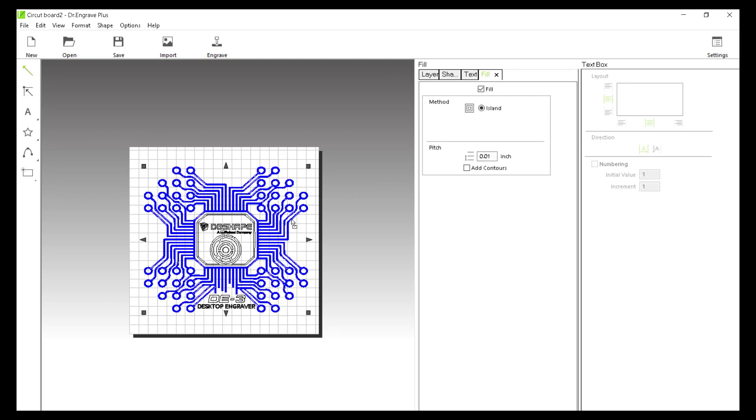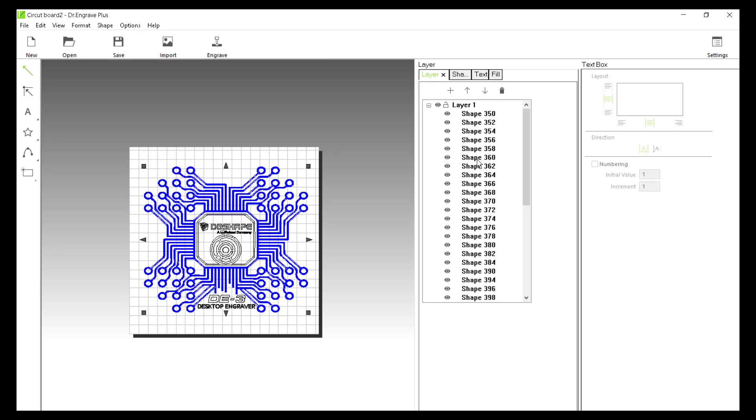Here I've placed an illustrator file. I've added some fill to certain areas. I have control over multiple layers, single layers, and or shapes within that layer.